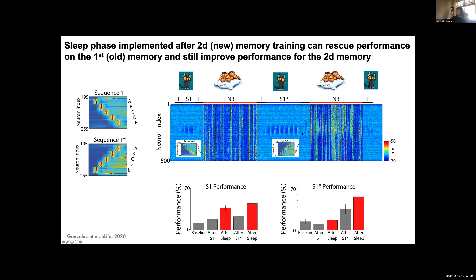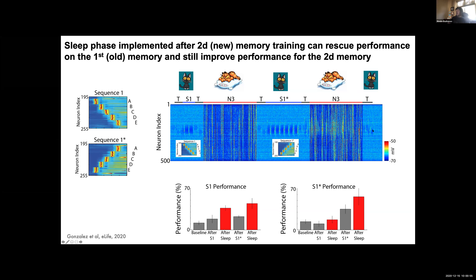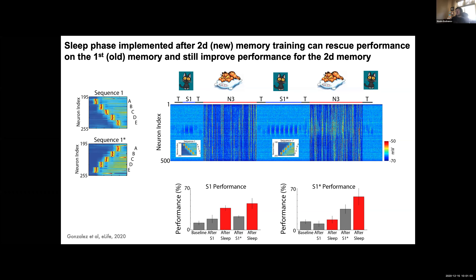What happens if we leave the network somewhere around here — when both memories are still in reasonable shape — and then introduce sleep again? One of the main predictions from that recent study was that actually both memories show increased performance after sleep. Just before the second sleep, the first memory is somewhat damaged and the second memory is learned to some degree. After sleep, most memories show a nice increase in performance. There was discussion in the paper about how both of them can be replayed simultaneously during sleep.